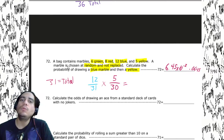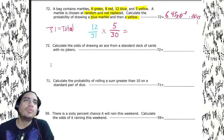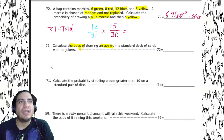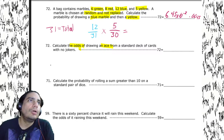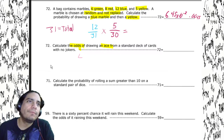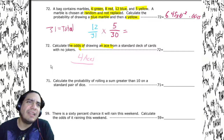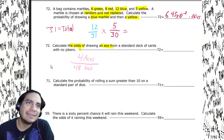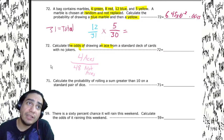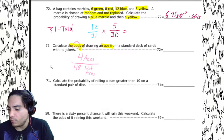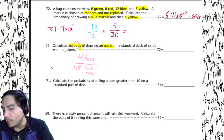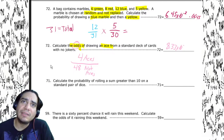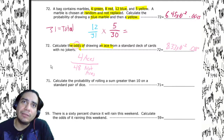Next, calculate the odds of drawing an ace from a standard deck of cards with no jokers. There are four aces. How many cards are not aces? 48 are not aces. Since we're doing odds, it's four over 48. We get 8.33 times 10 to the negative second, or 0.0833.